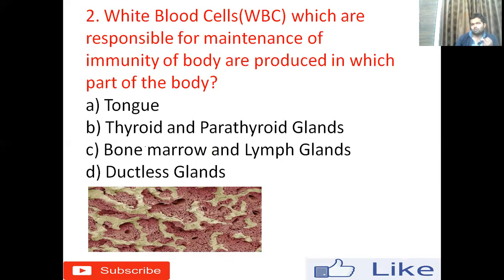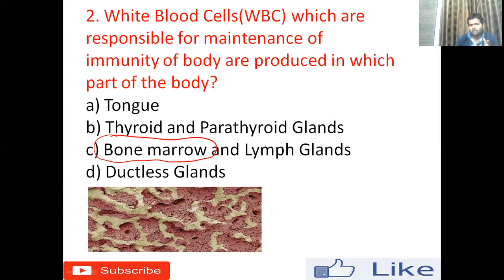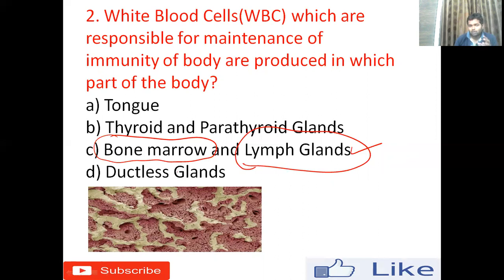Blood is produced inside the bone in a spongy structure called bone marrow. White blood cells are also found in the lymph glands. So the right answer for this question is option C — bone marrow and lymph glands. Remember: blood is manufactured inside the bone in that spongy part called bone marrow.